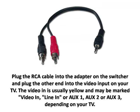Step 3: Plug the RCA cable into the adapter on the switcher and plug the other end into the video input on your TV. The video input is usually yellow and may be marked as video in, line in, or 01, 02, or 03, depending on your TV.